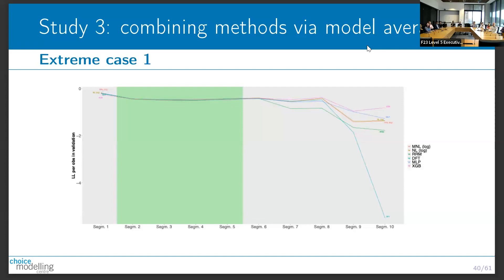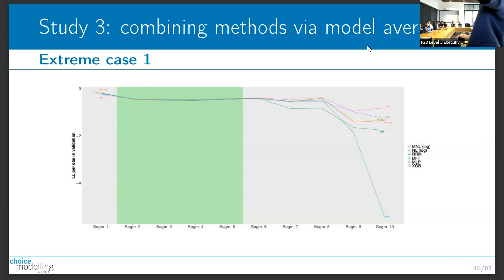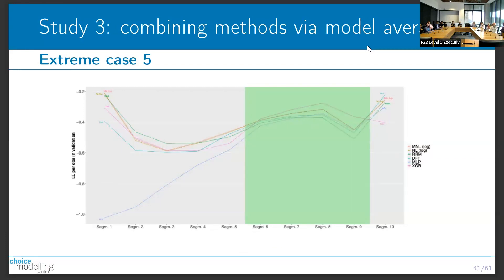Models estimated on segments 2-5 actually predict segment 1 a little better than the area in which they were estimated, because very short trips are easy to predict. But as I move away, DFT really struggles. On the other hand, if I've estimated models on longer trips (segments 6-9), the neural network is terrible at predicting very short trips. There are clear differences across models in what they do in out-of-distribution prediction.